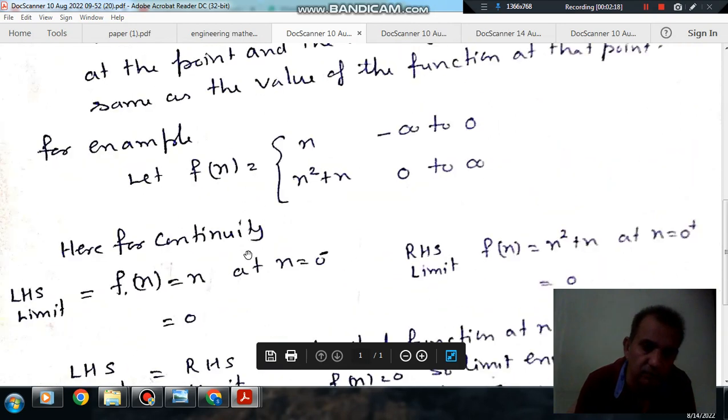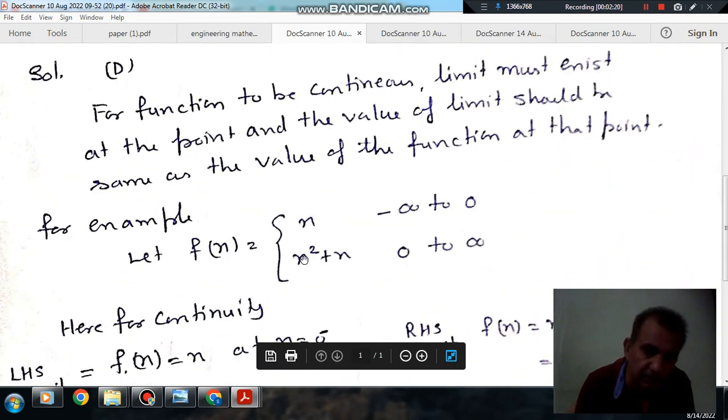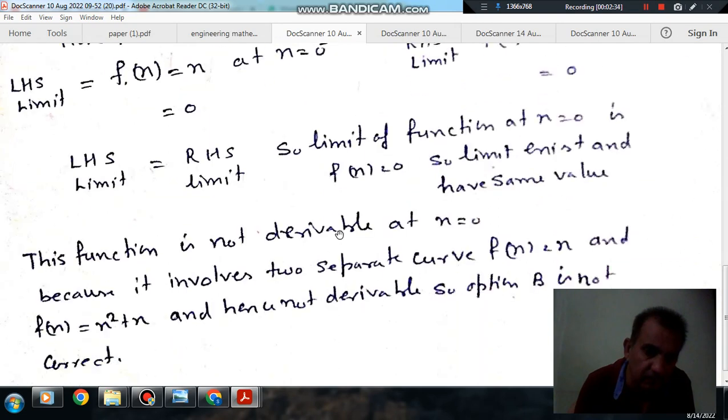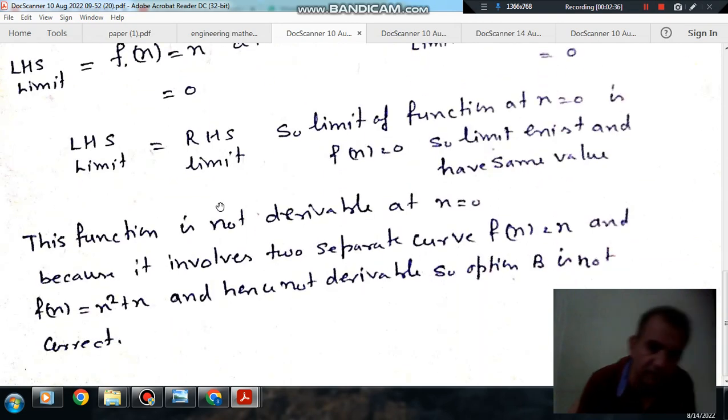This function is not derivable because this involves two separate curves, that is x and x squared plus x. These two curves separate at x equals 0. So at x equals 0 this function is not derivable, but at any other place it is derivable. For any other value it is derivable.